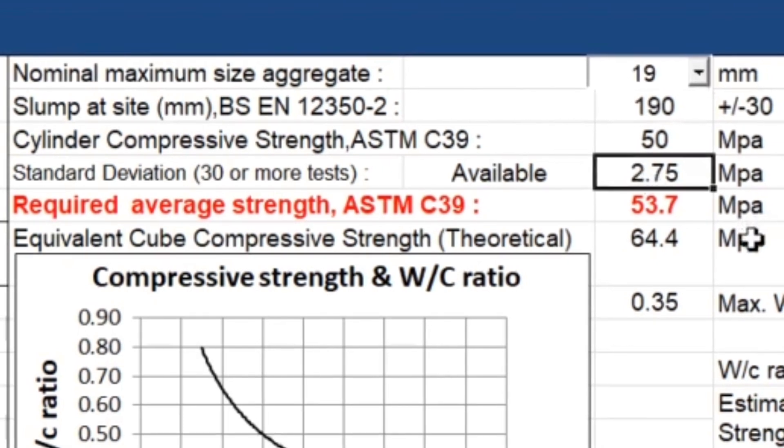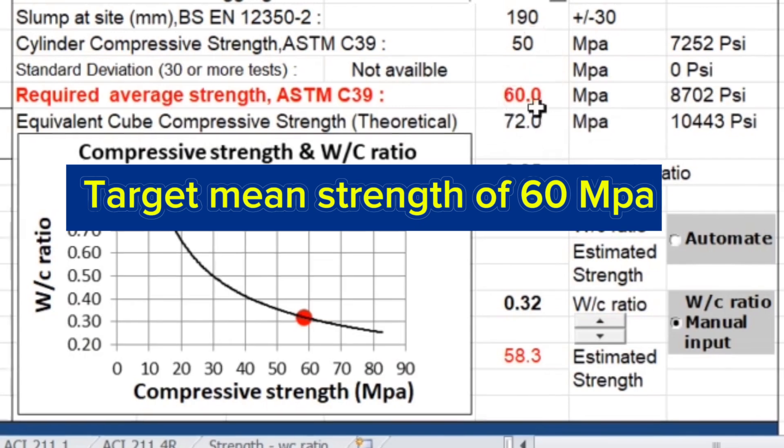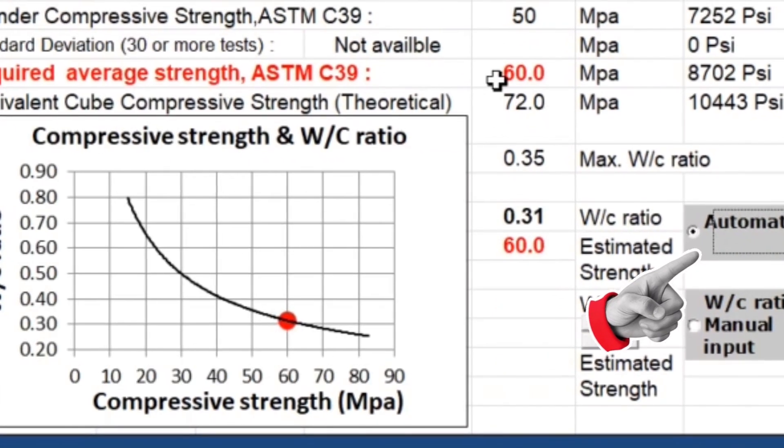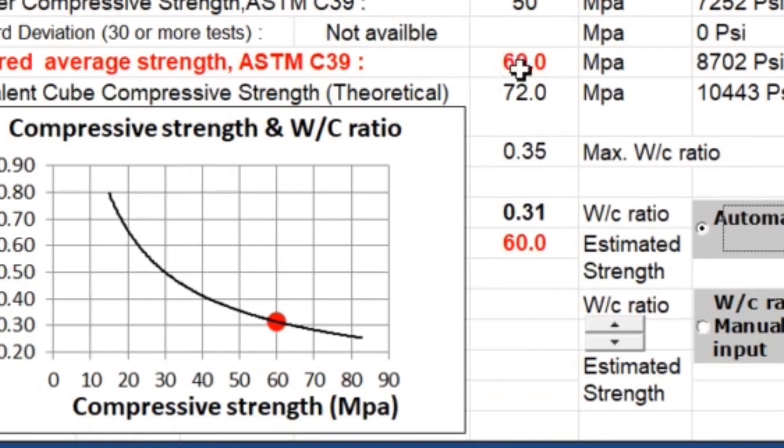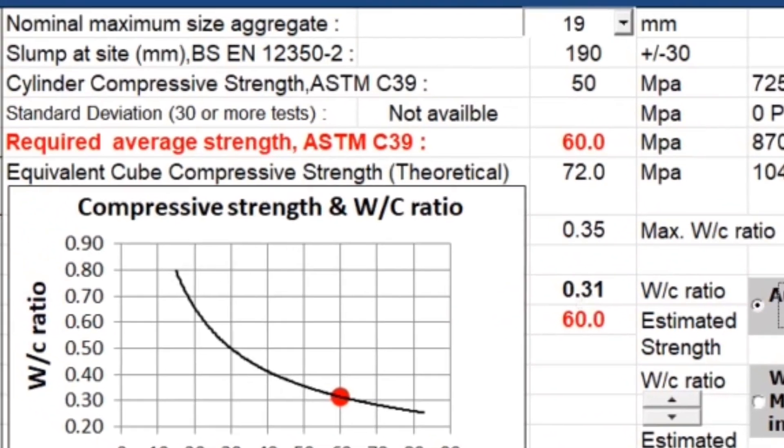So in the beginning, let's say I don't have standard deviation, and target mean strength is 60 MPa. By pressing this automation button, the required average compressive strength of 60 MPa can be achieved using estimated 0.31 water cement ratio.